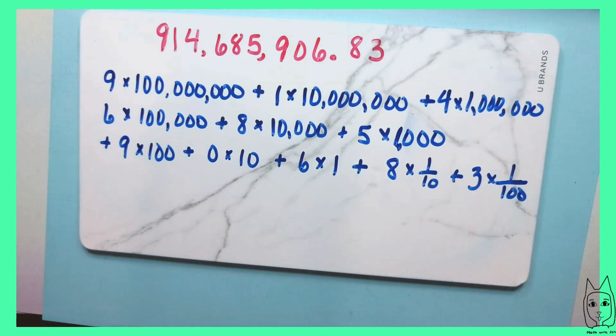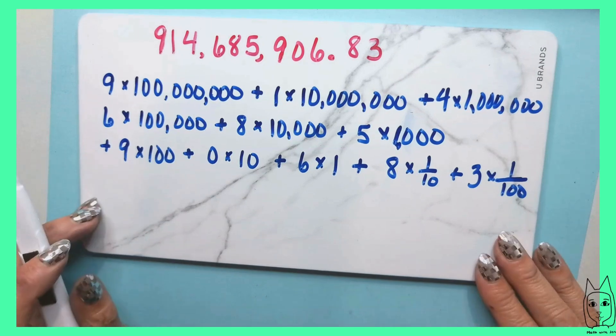And that is nine hundred and fourteen million, six hundred and eighty five thousand, nine hundred six and eighty three hundredths written as expanded notation.